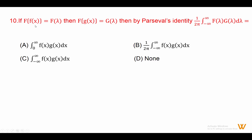Ten: if the Fourier transform of fx is F(lambda) and the Fourier transform of gx is G(lambda), then by Parseval's identity, 1 upon 2pi, integration from minus infinity to plus infinity of F(lambda) G(lambda) d lambda, is equal to integration from minus infinity to plus infinity of fx times gx dx. Answer is option C.